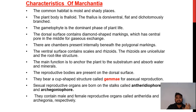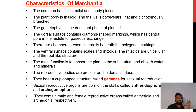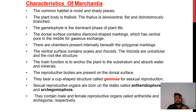The characteristics of Marchantia: it is commonly found in moist and shady places. The plant body is thallose. The thallus is dorsiventral, flat and dichotomously branched. The gametophyte is the dominant phase of the plant life. The dorsal surface contains diamond-shaped markings with a central pore for gaseous exchange. The ventral surface contains scales and rhizoids. The rhizoids are unicellular and root-like structures whose main function is to anchor the plant to the substratum and absorb water and minerals.